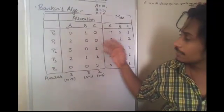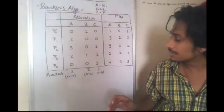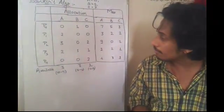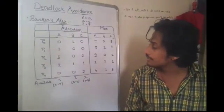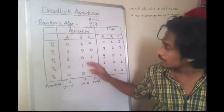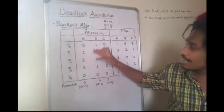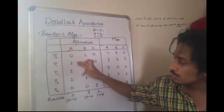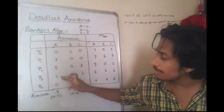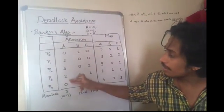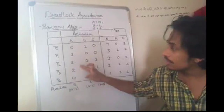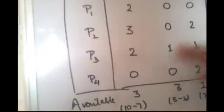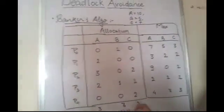In this way, a table is created which notes the instances of individual resources allocated to each process. Using this we will create an available count for each resource. We have 10 instances of A available. P0 uses none, P1 uses 2, P2 uses 3, P3 uses 2, and P4 uses none. So we are using 2 plus 3 plus 2, that is 7. The resources left are 10 minus 7, that is 3. In this way we calculate available resource instances. We have 3 instances of A, 3 instances of B, and 2 instances of C.